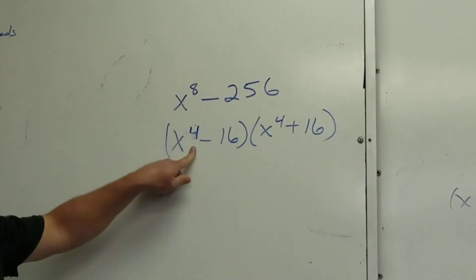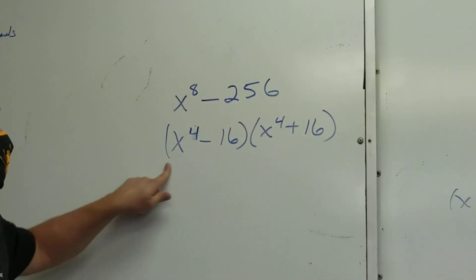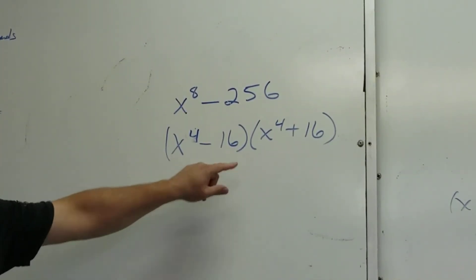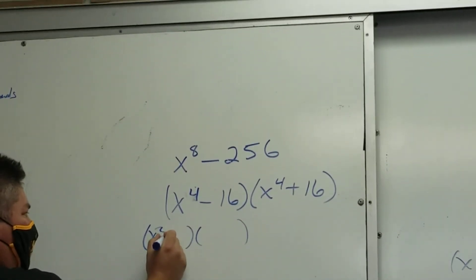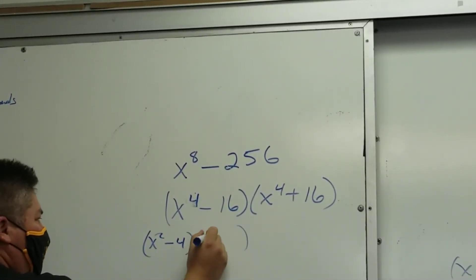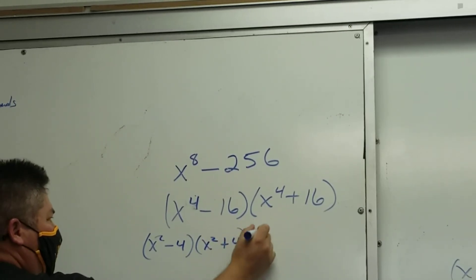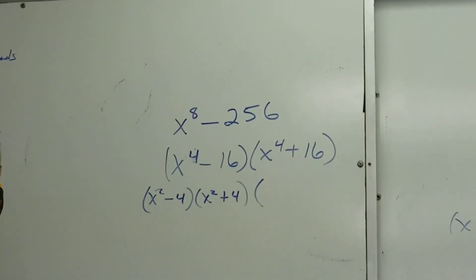Because down here, you can square it in. That's the difference of perfect squares, right? So what's that one? x squared minus 4 and x squared plus 4. Can I factor that one? No.